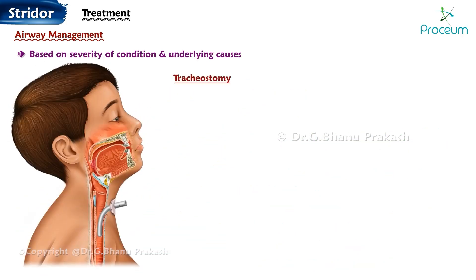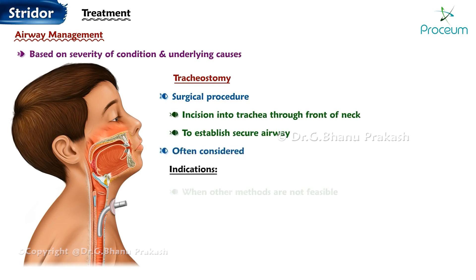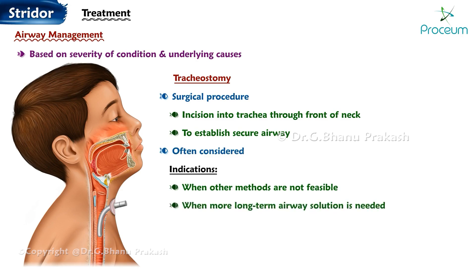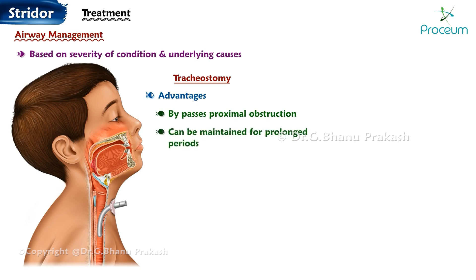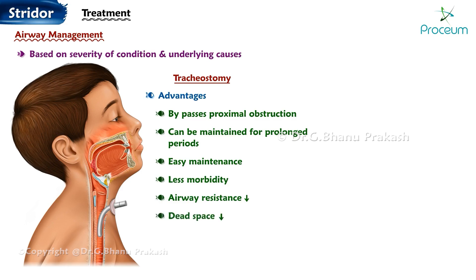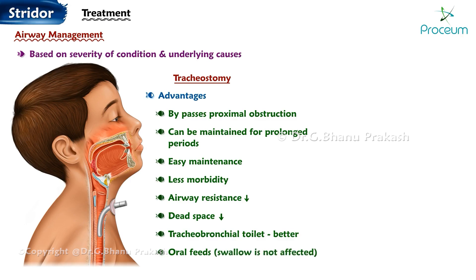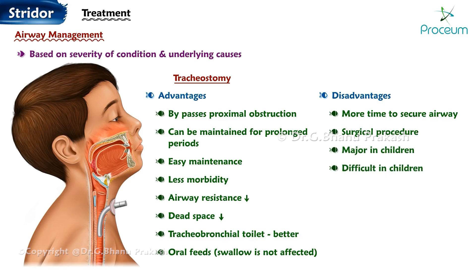Tracheostomy is a surgical procedure in which an incision is made into the trachea through the front of the neck to establish a secure airway. It is often considered when other methods are not feasible or when a more long-term airway solution is needed. Advantages: bypasses proximal obstruction, can be maintained for prolonged periods, easy maintenance, less morbidity, reduced airway resistance and dead space, better tracheobronchial toileting, and oral feeds can be given as swallowing is not affected. Disadvantages: takes more time to secure the airway, is a surgical procedure, is more difficult and major in children, requires expertise, and surgical complications may occur.